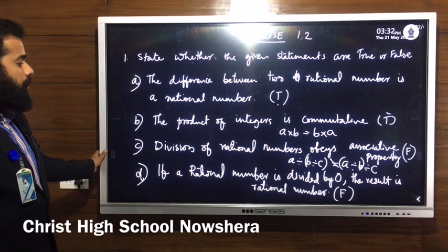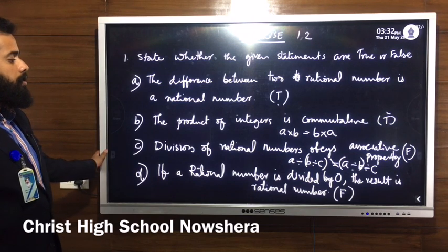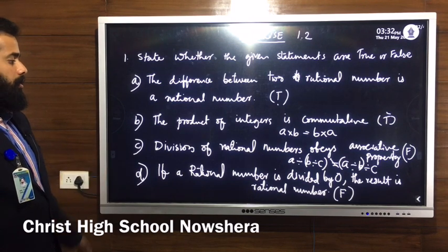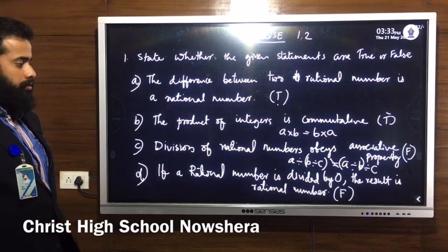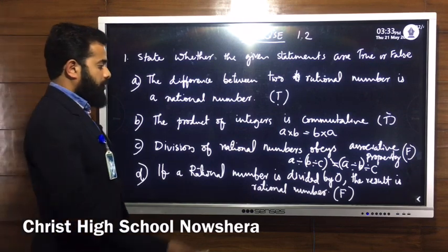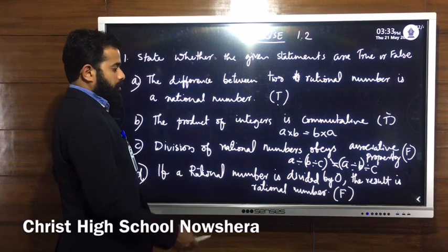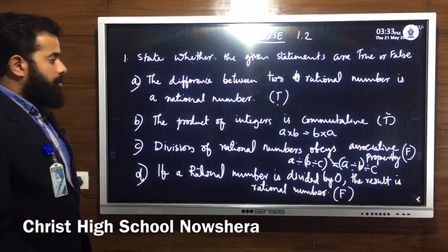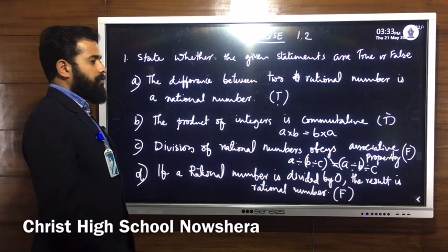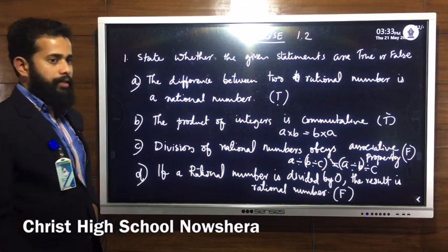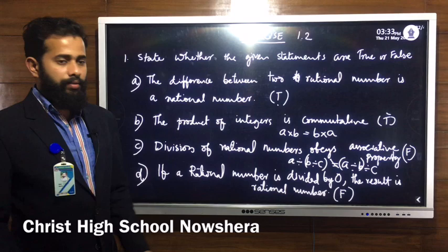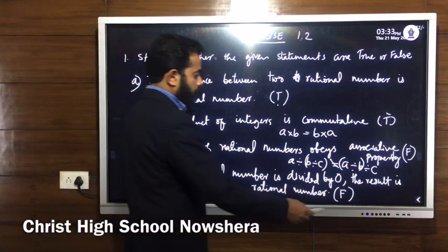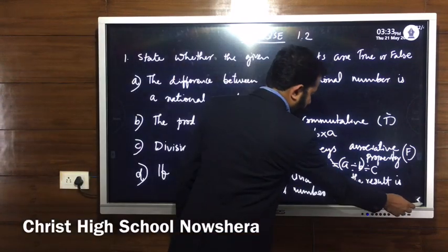The last one: if a rational number is divided by 0, the result is a rational number. Any number, whether it is rational or not, if you divide by 0, the result will be not defined. We cannot say that the result is a rational number; the result is not defined. So the statement is false.